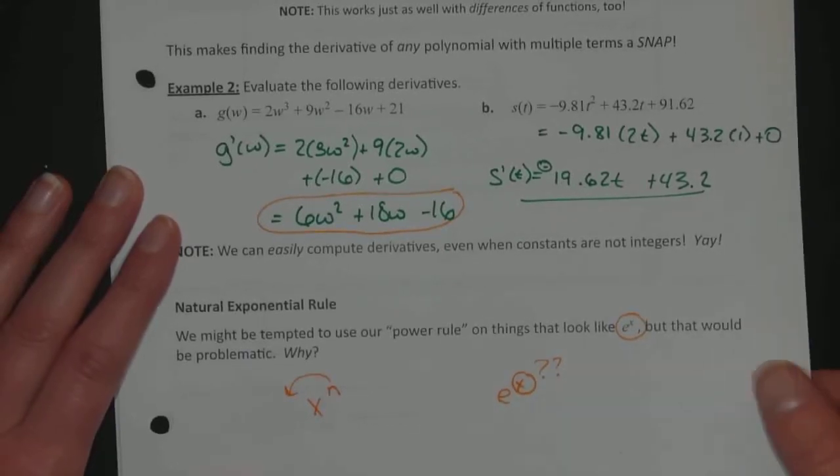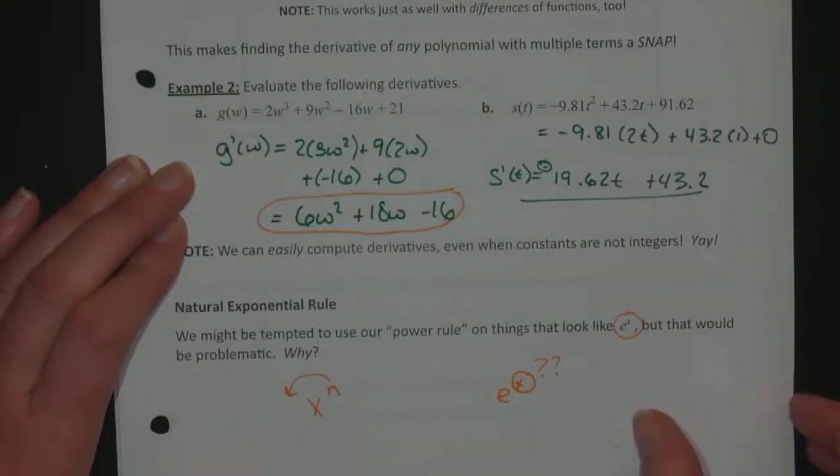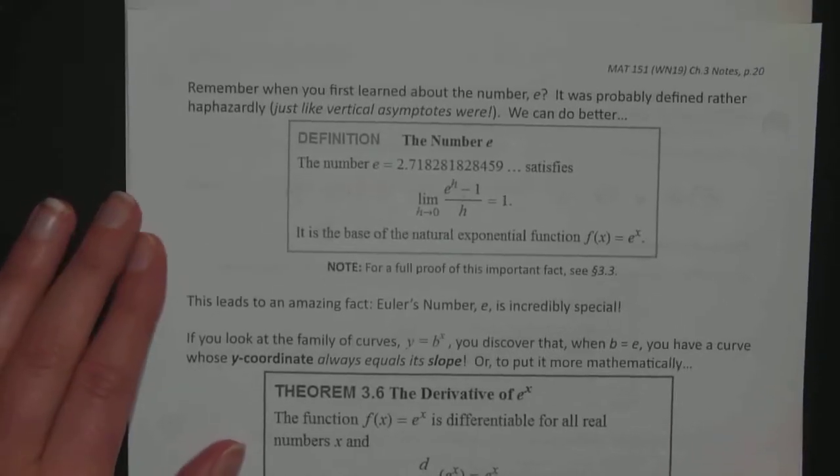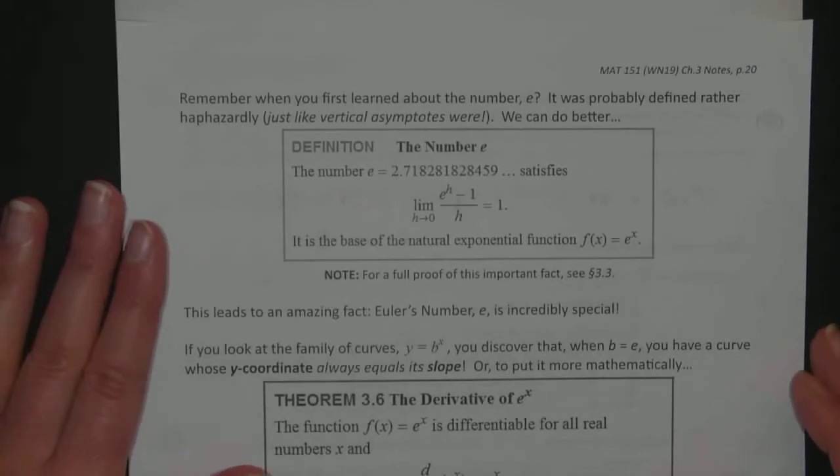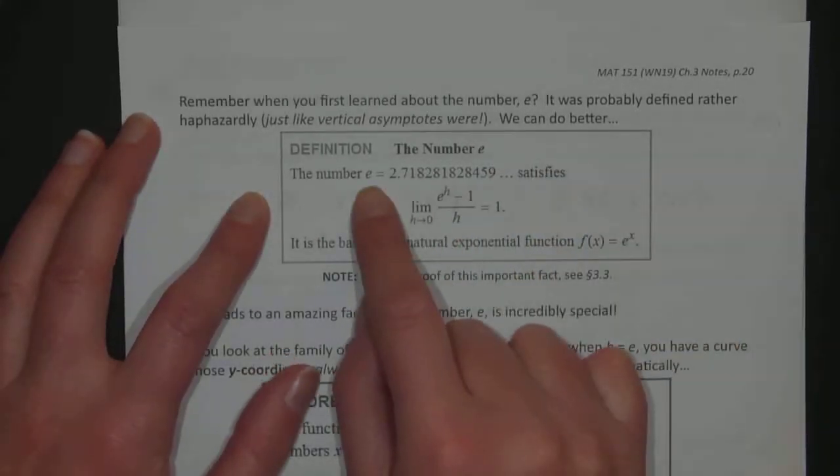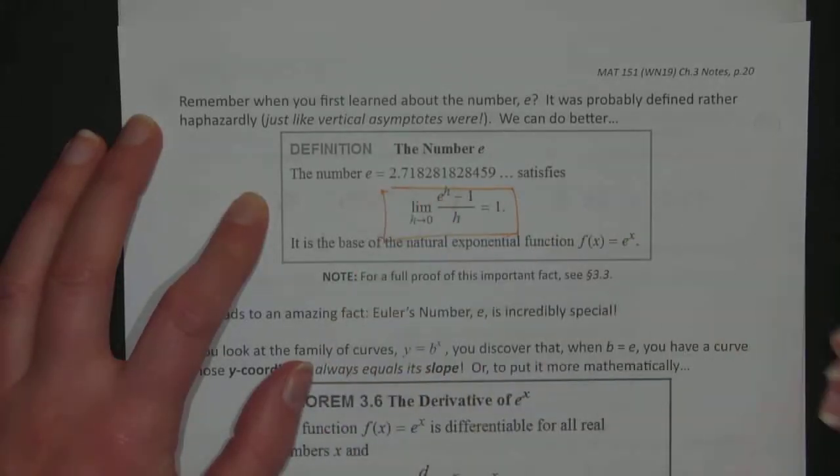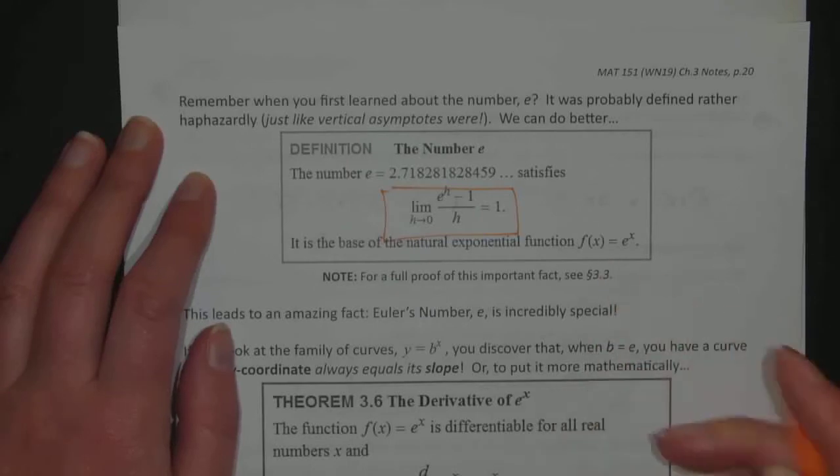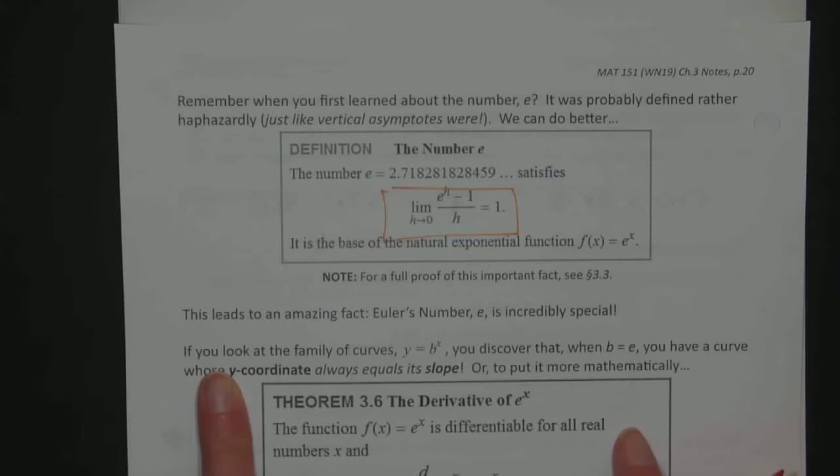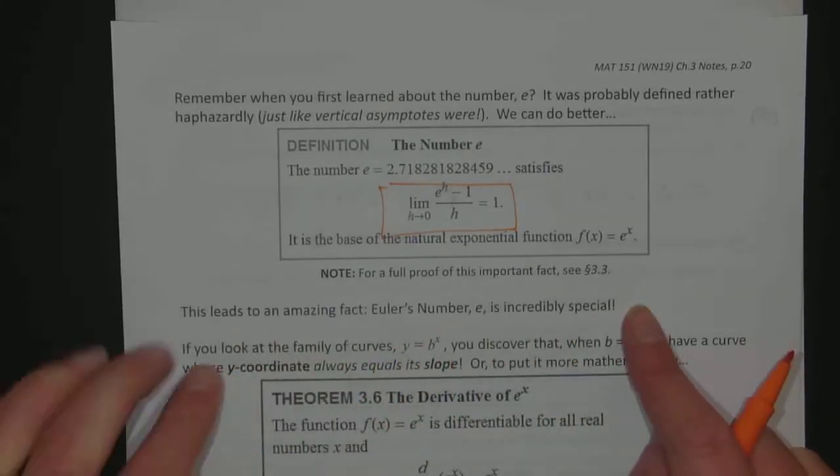Remember when we first learned about the number e, it was probably defined kind of haphazardly like vertical asymptotes were, but we can do better. The number e is defined and was originally defined to satisfy this definition, this limit definition. There's a full proof in 3.3, so we'll see in section 3.3 in the book. Euler's number is very special. It comes from a special limit.